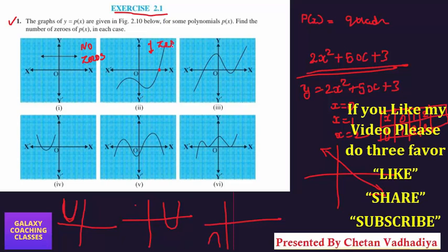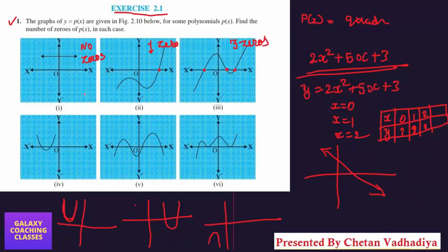Now in this, the curve is intersecting the x-axis one time, so one zero. In this, you can see it's intersecting three times on the x-axis, so you will get three zeros. Here this parabola is intersecting two times, so you will get two zeros.